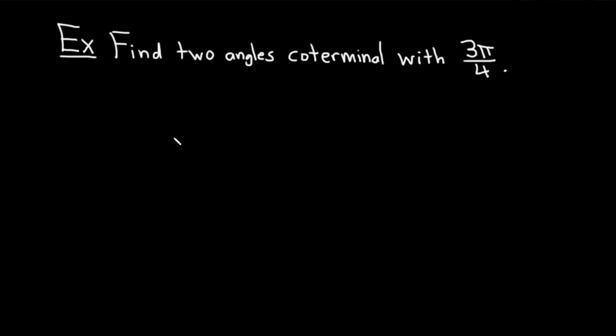In this last example, we are going to find two angles that are coterminal with 3 pi over 4. Let's go ahead and solve this. Solution. So, two angles are coterminal if they differ by a multiple of 360 or 2 pi.